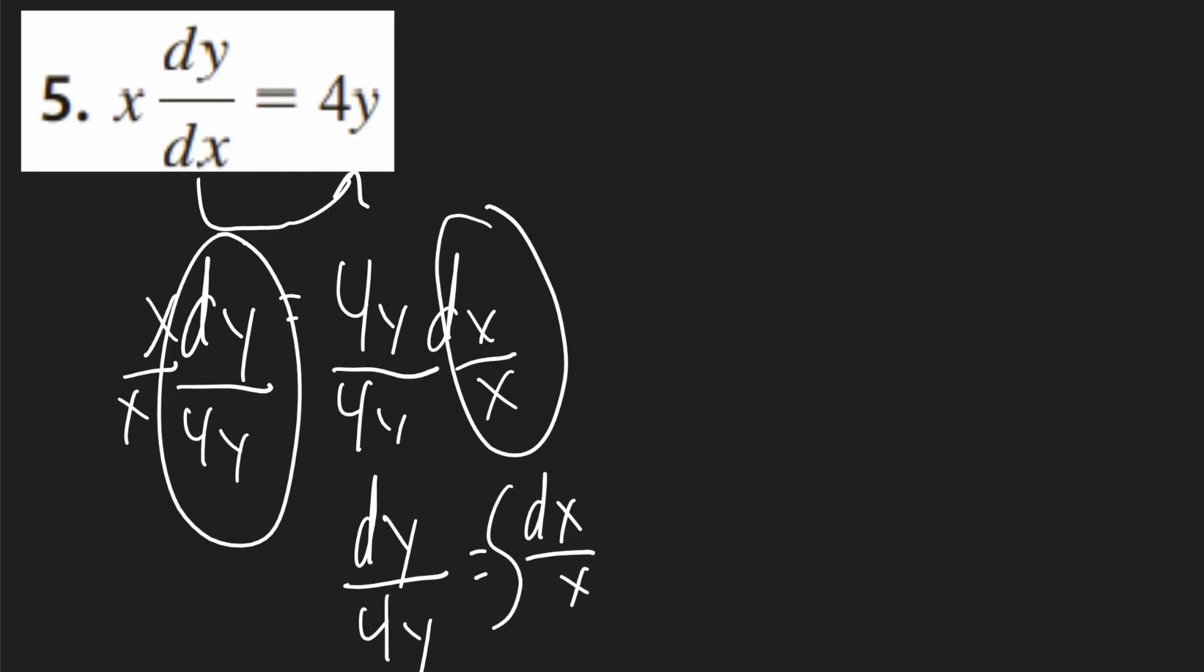Now I'm going to integrate both sides. On the left, I can pull a 1 fourth out. So it'll be 1 fourth times 1 over y dy, and the right will be the integral of dx over x. So this will be 1 fourth ln y. ln y is equal to ln x plus c.